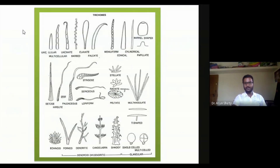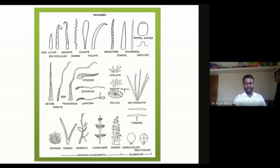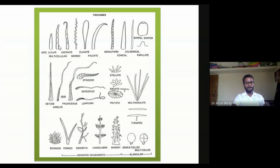Looking at different trichome structures, here we can see a unicellular simple trichome. The multicellular trichome contains one, two, three, four, or five cells arranged one over the other. In unicellular trichomes, structurally they are quite different from multicellular ones, and there may be a small curvature visible in the structure.